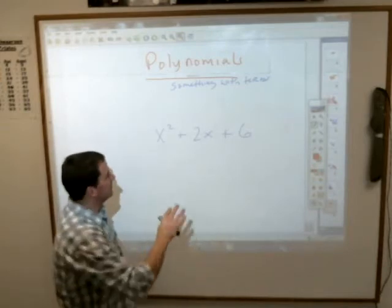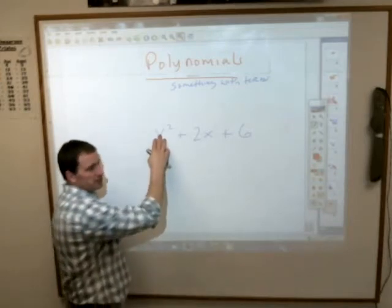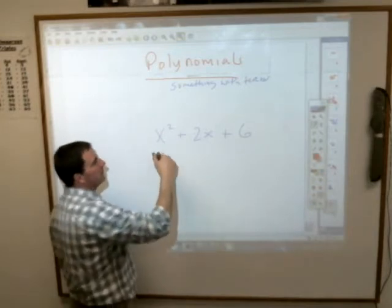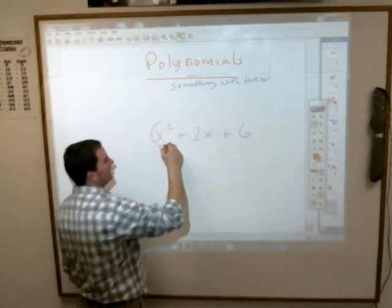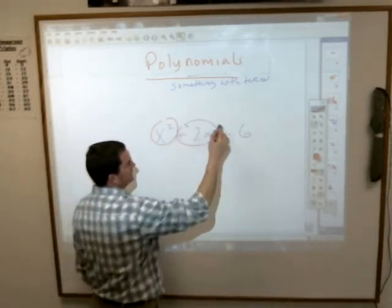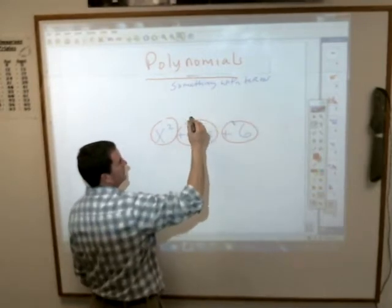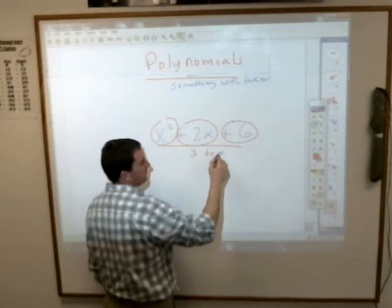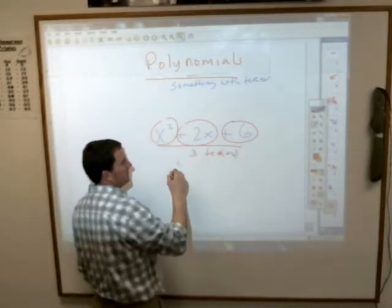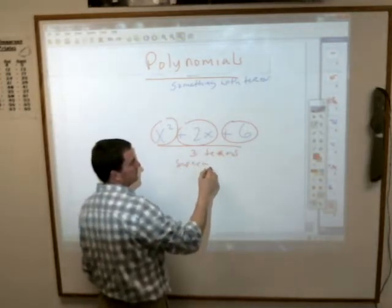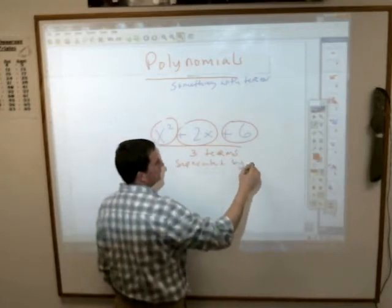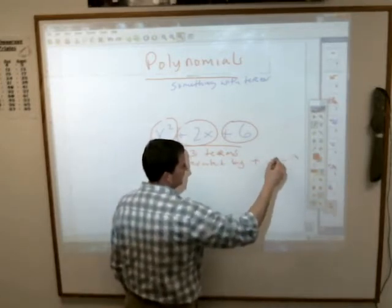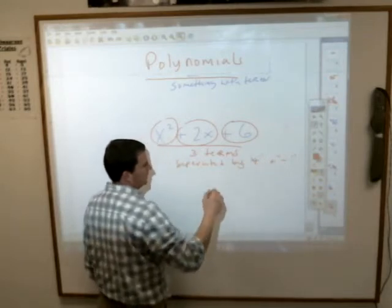A term can be anything. x squared is x times x — you can multiply and still have one term. Terms are separated by addition and subtraction signs. This has three terms, and they are separated by pluses and minuses — additions and subtractions.